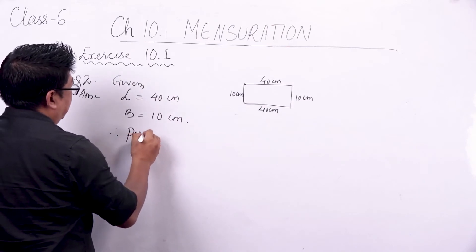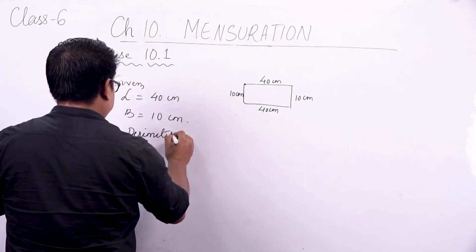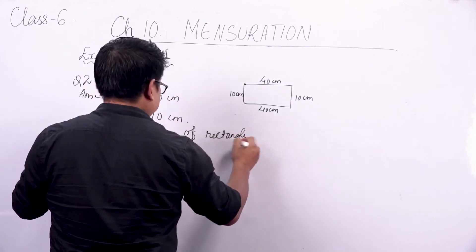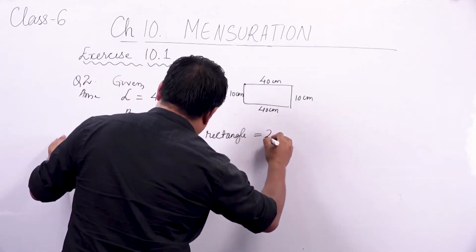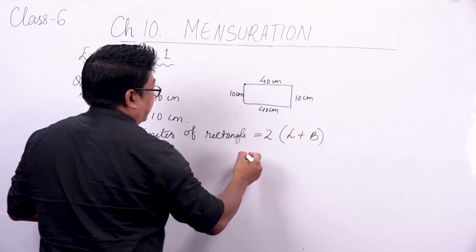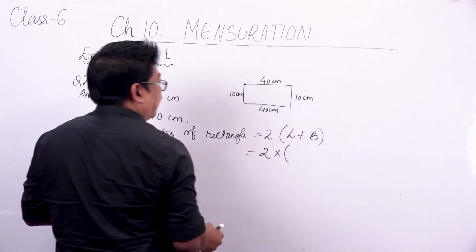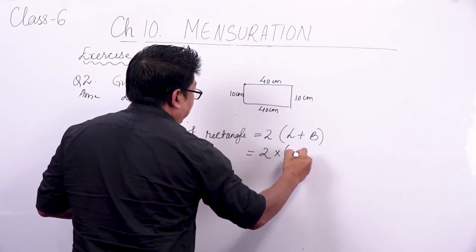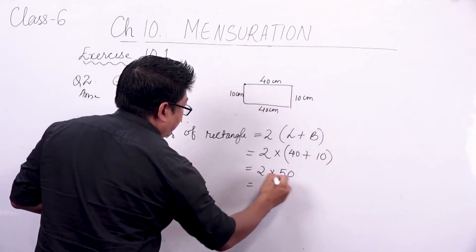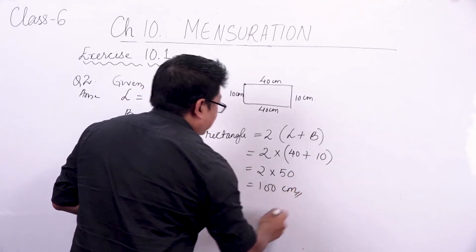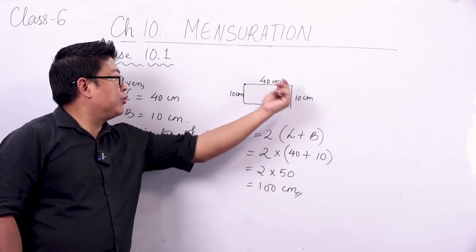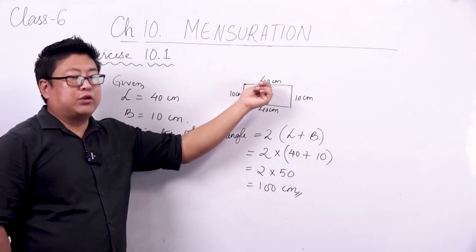Therefore, perimeter of rectangle is equal to twice of L plus B. So 2 into (40 plus 10), which is 2 into 50. When you multiply this, you get 100. So your total length of tape should be 100 cm for it to seal all parts of the lid.